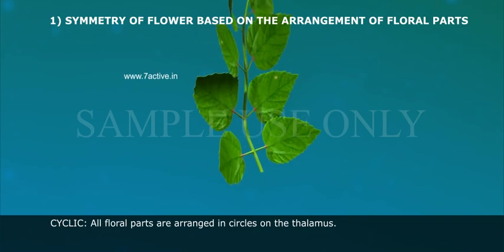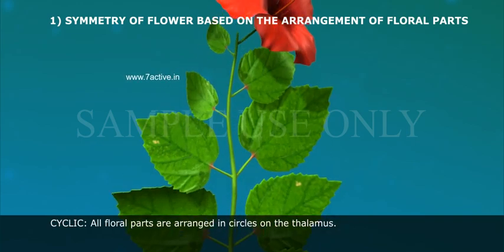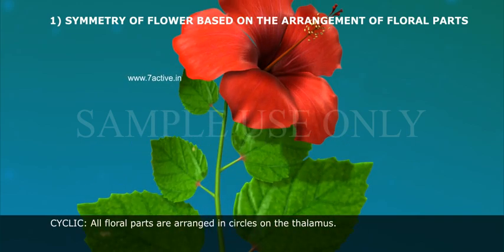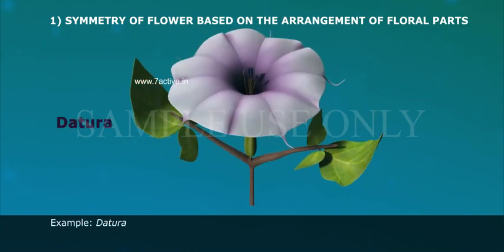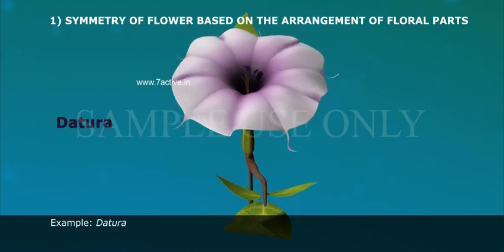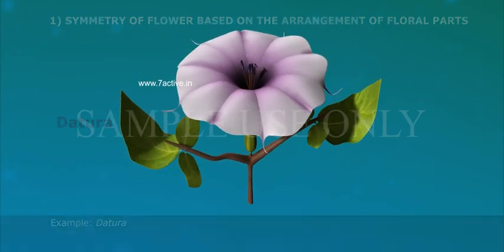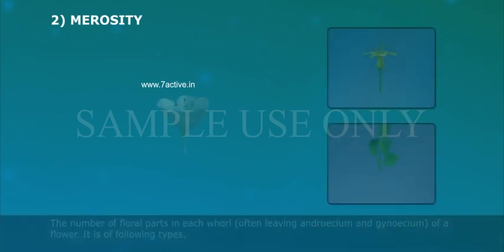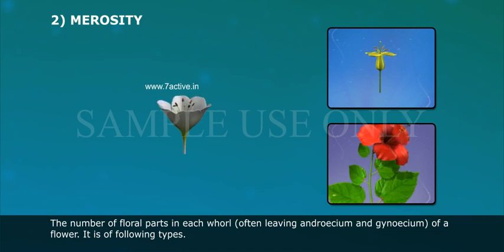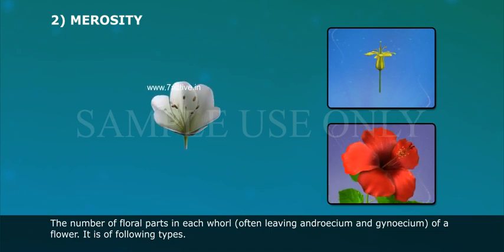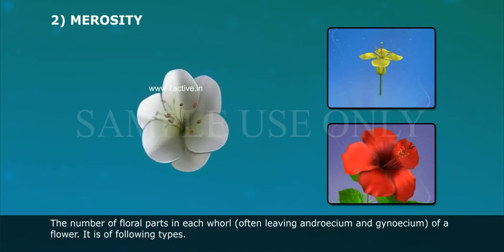Cyclic: all floral parts are arranged in circles on the thalamus. Examples: hibiscus, datura. Merosity: the number of floral parts in each whorl, often excluding androecium and gynoecium of a flower.